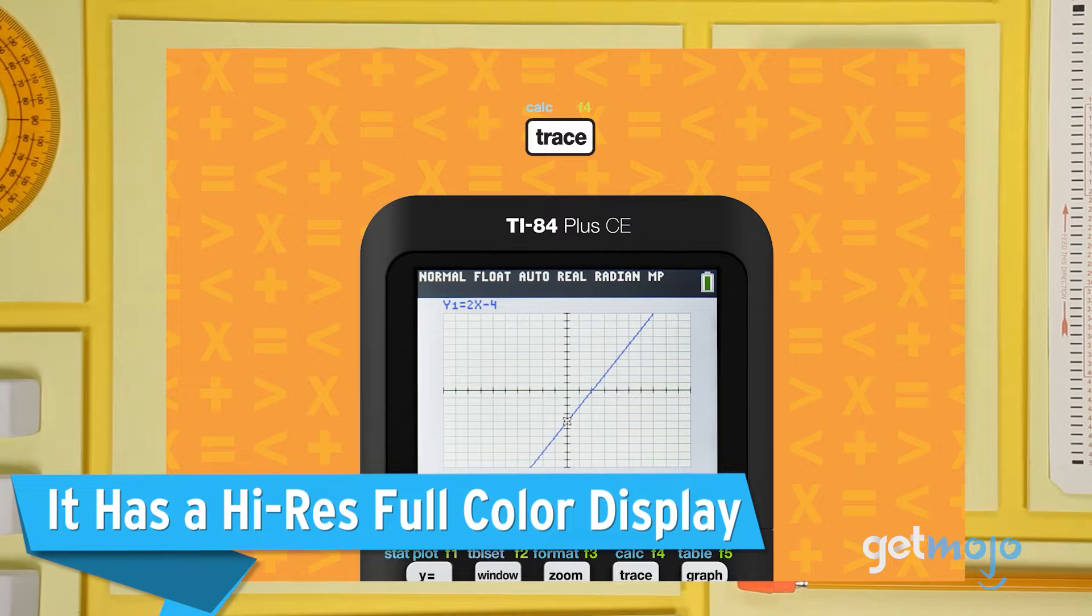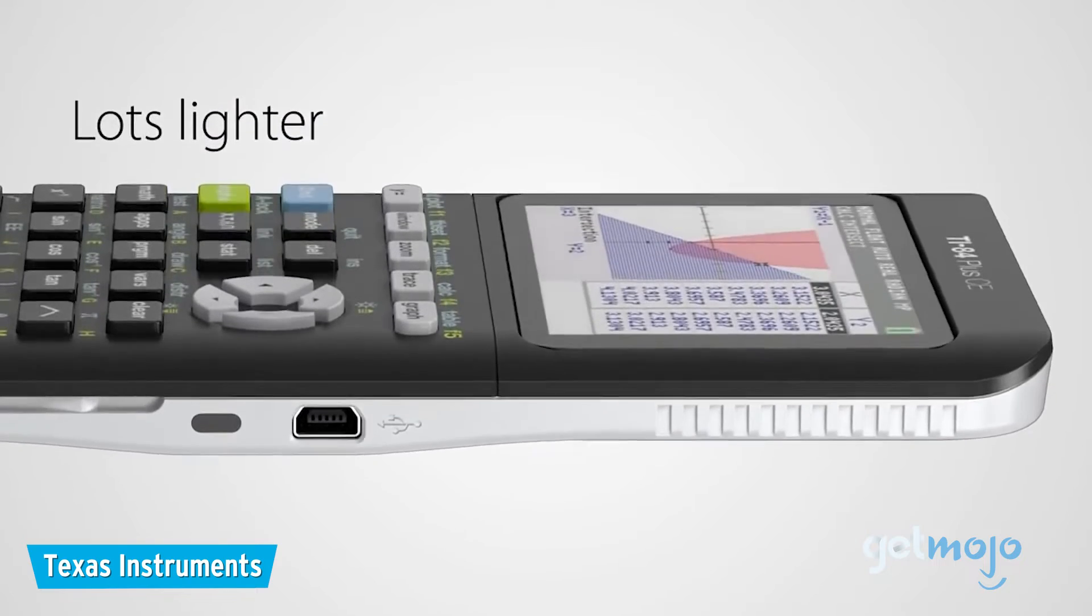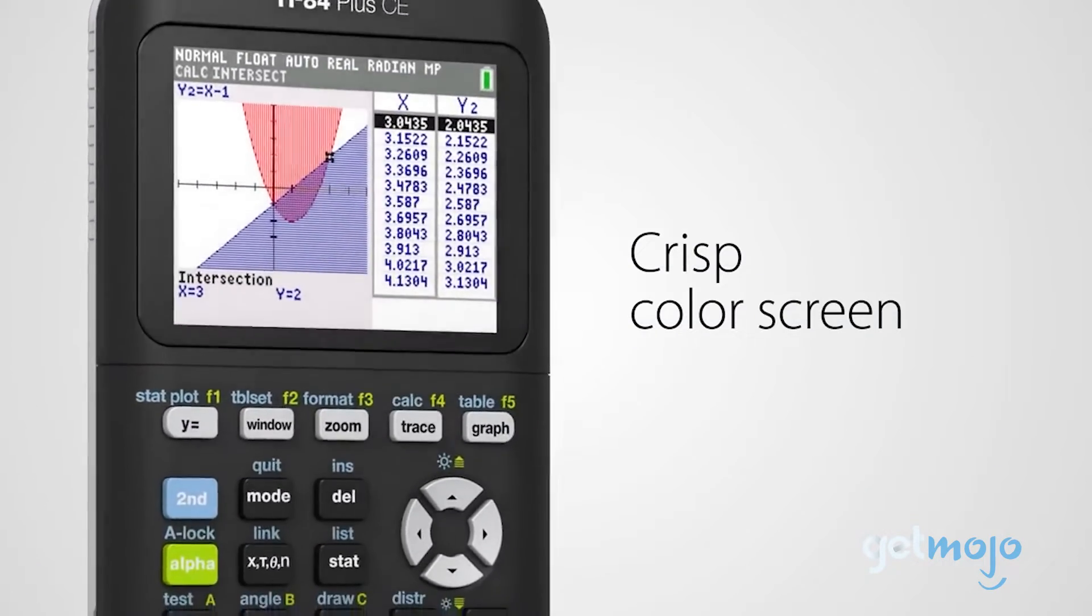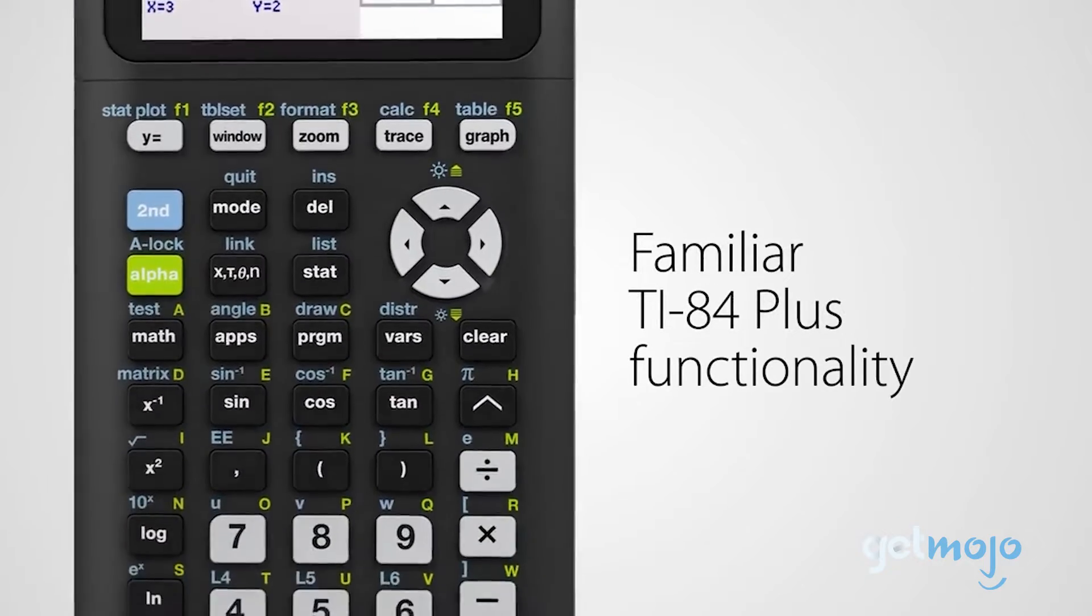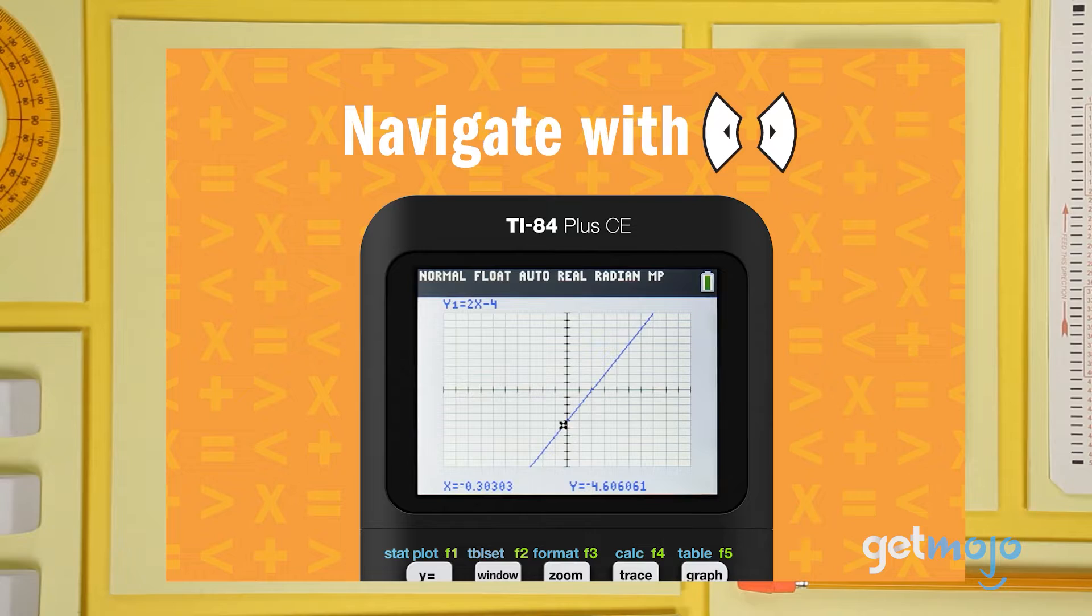It has a high-resolution, full-color display. The first way that the Texas Instruments TI-84 Plus CE calculator stands out from other calculators is its ability to turn abstract numbers into vibrant visuals with its high-resolution, backlit color screen. Not only does this enhance readability, but it also allows for the addition of gridlines to graphs, making data interpretation more intuitive.